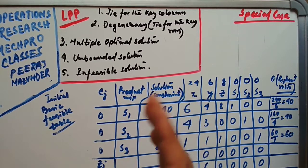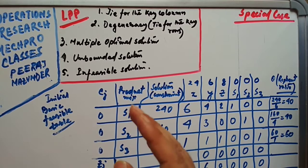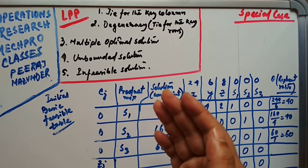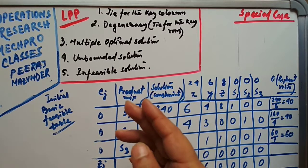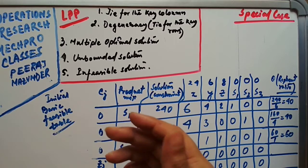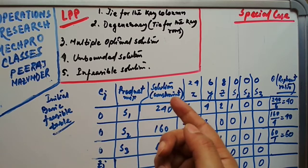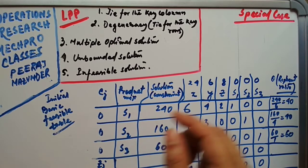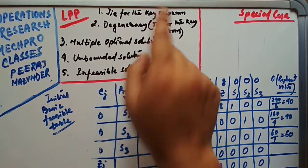In my previous video where we solved LPP by graphical method, we already discussed the meaning of degeneracy, multiple optimal solution, unique optimal solution, unbounded solution, and infeasible solution. But this is the case for the simplex method. So let us start with the first one — the tie for the key column.